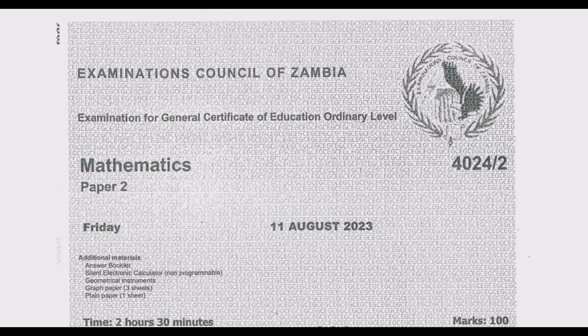Welcome viewers to the fifth episode in a series of 12 episodes focused on the August 2023 mathematics paper 2. The first four episodes covered questions 1 through 4. Note that we have done mathematics paper 1 of the August 2023, it is on our YouTube channel, just check for the playlist which contains all the solutions to the 23 questions.